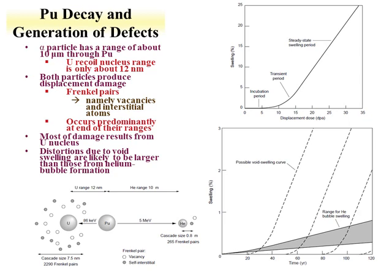Here's an example of radiation damage. An alpha particle has a range of about 10 microns through plutonium metal. The uranium recoil range is much, much smaller — about 12 nanometers. Frenkel pairs are formed through this process, where you have vacancies and interstitials. Vacancies are holes where an atom should be, and an interstitial is an atom sitting where it shouldn't be. These pairs coalesce together. There's a shorter range but many more Frenkel pairs — about an order of magnitude more — produced from the uranium recoil.